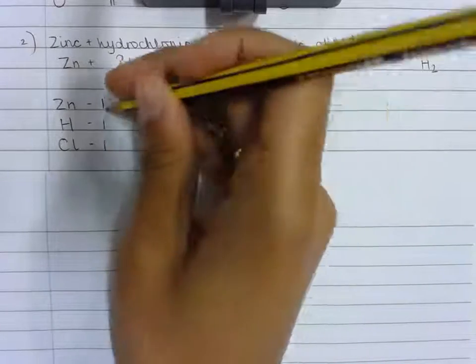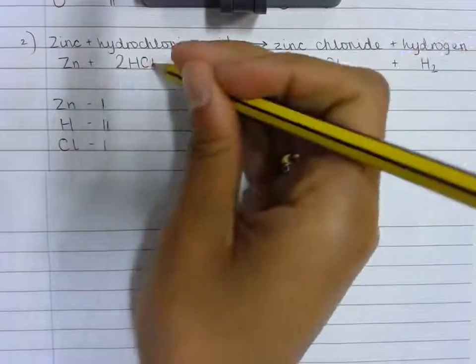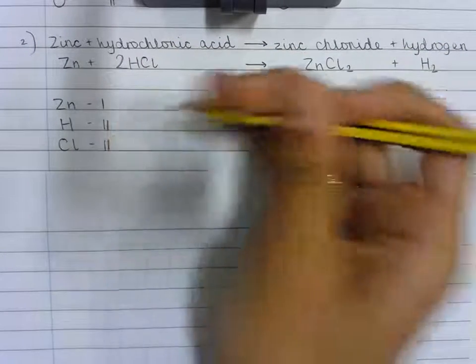So to re-tally there are two hydrogen atoms and two chlorine atoms on the reactant side.